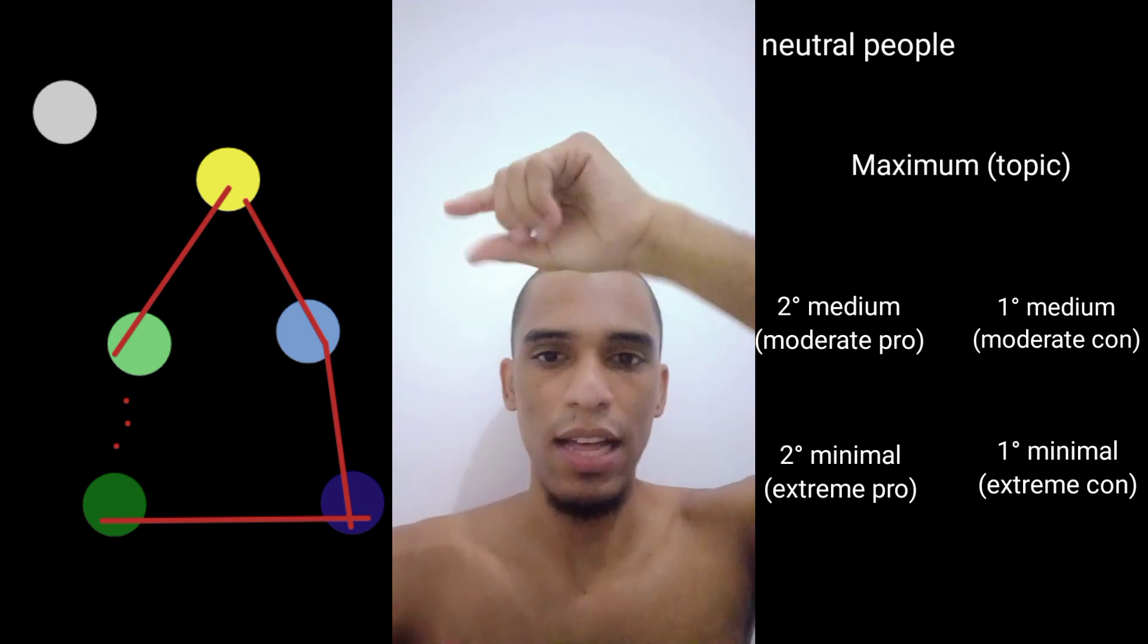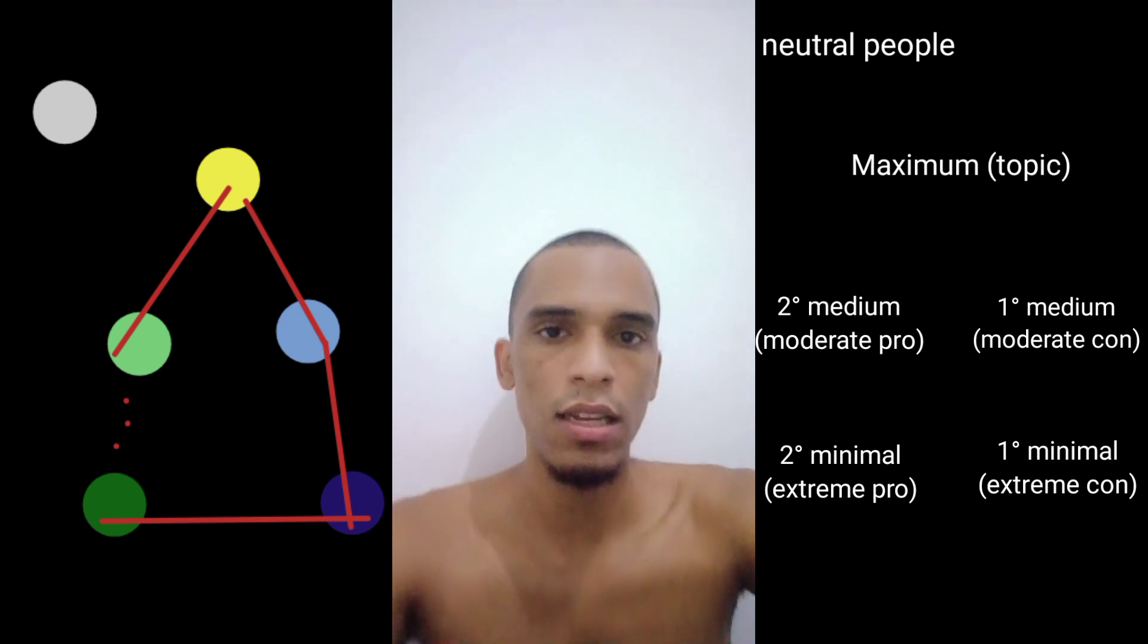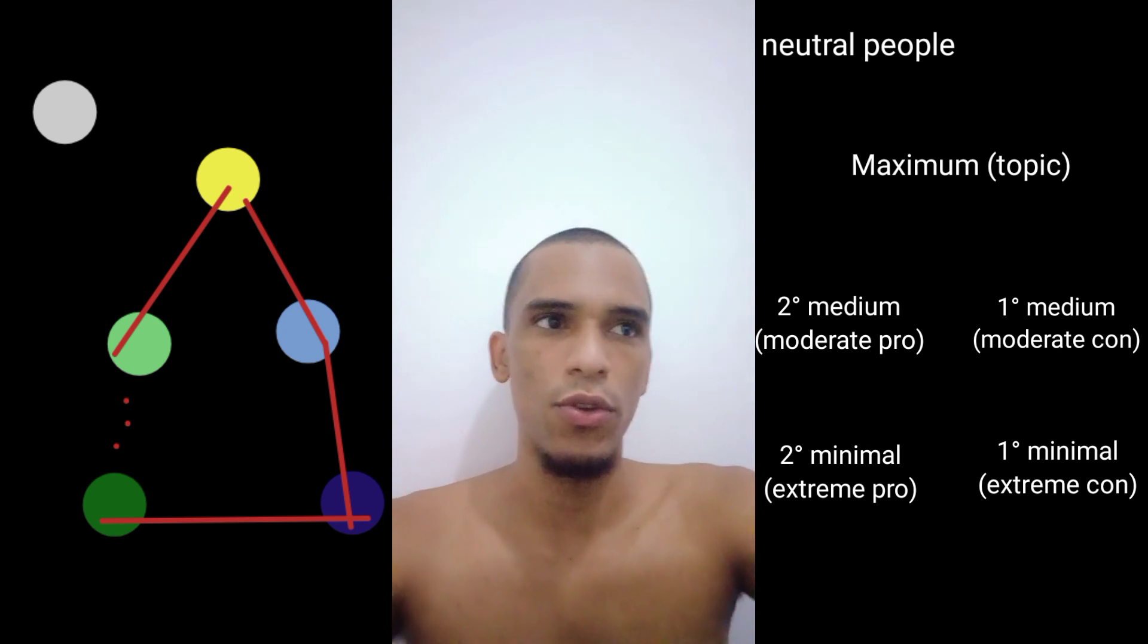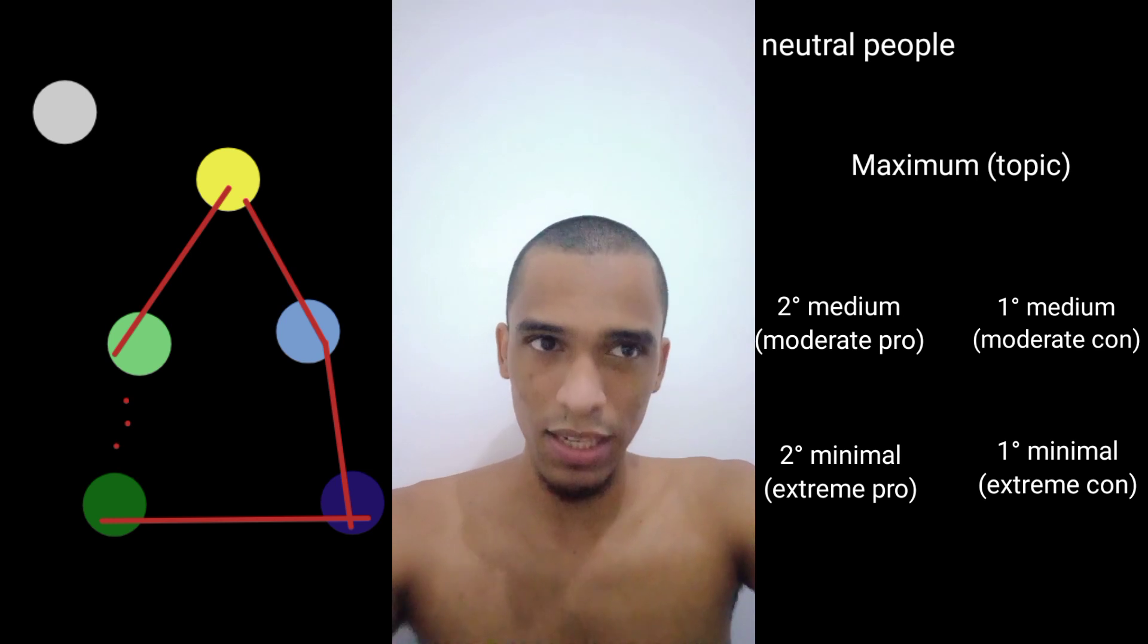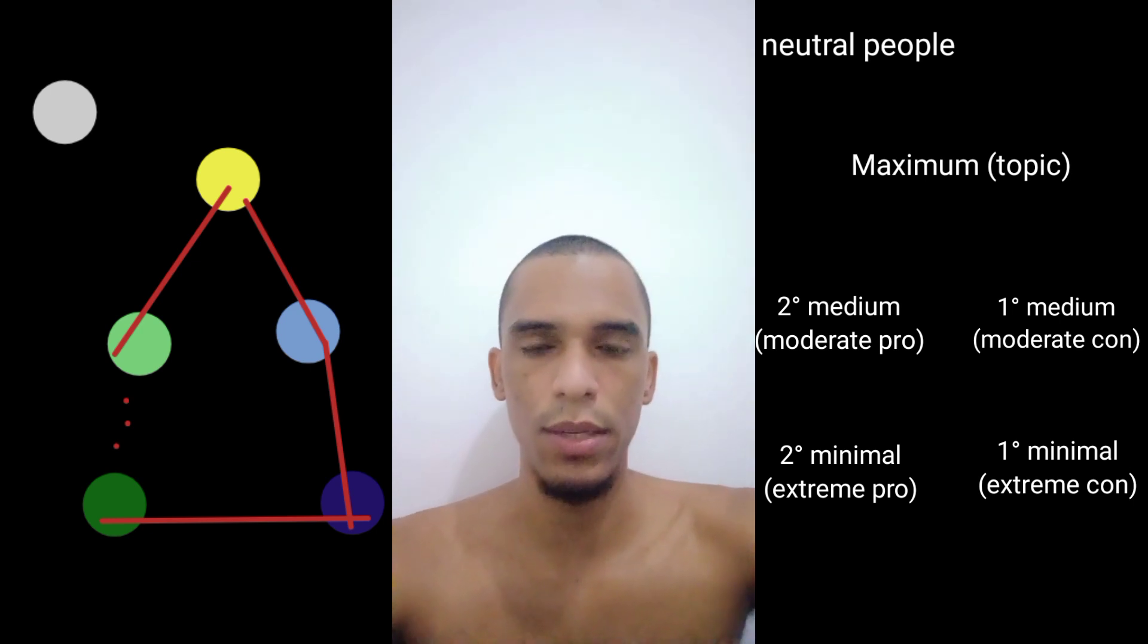They look like they live in a bubble, and everyone who disagrees with them are dumb. Then we have the second medium, the moderate pro. Basically, people that are a bit more conscious about their opinions and not just hate and love. You can like, adore something without being extreme. The first minimal is like, you need to hate this, if you don't you're wrong.